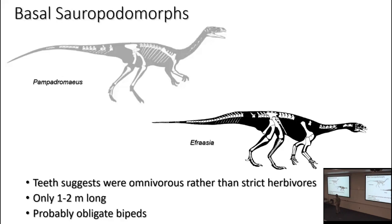Here are some of the basal members of sauropodomorpha. First, they are small — only about one to two meters long, which shouldn't be a surprise since basal members of all dinosaur groups are about that size. The teeth suggest they were omnivorous rather than strict herbivores, and the teeth of at least one suggest they were carnivores. The forelimbs are fairly strong but not adapted to weight-bearing, and the hands can't be put into a weight-supporting position — so they were probably obligate bipeds, the ancestral condition for dinosaurs.